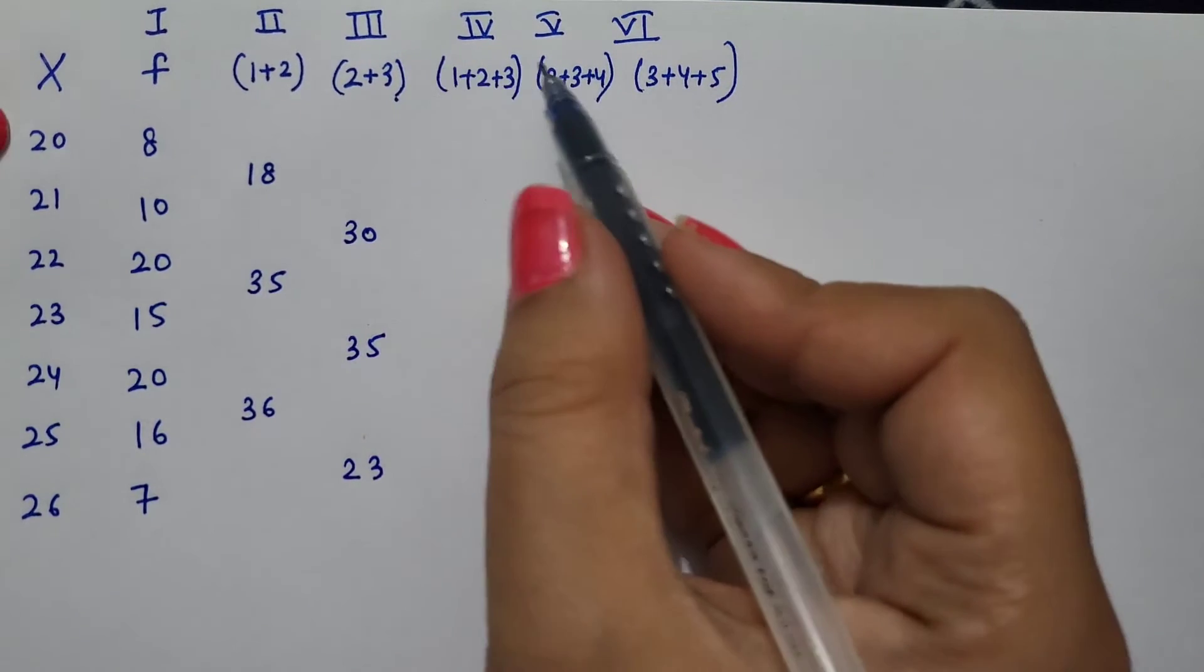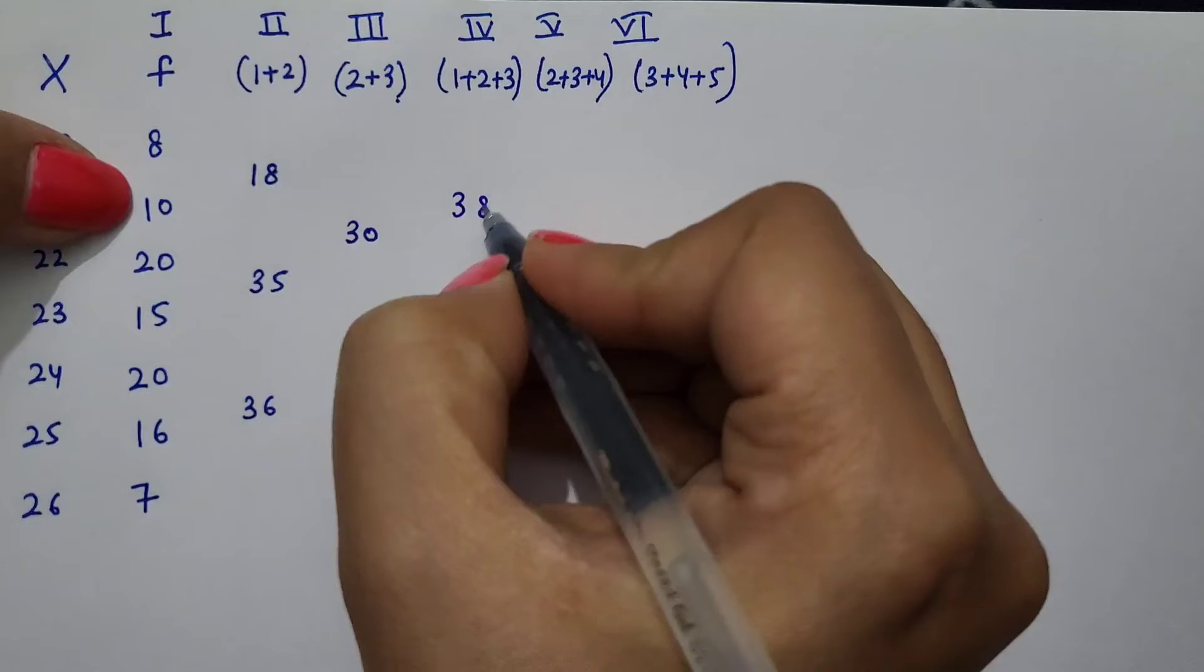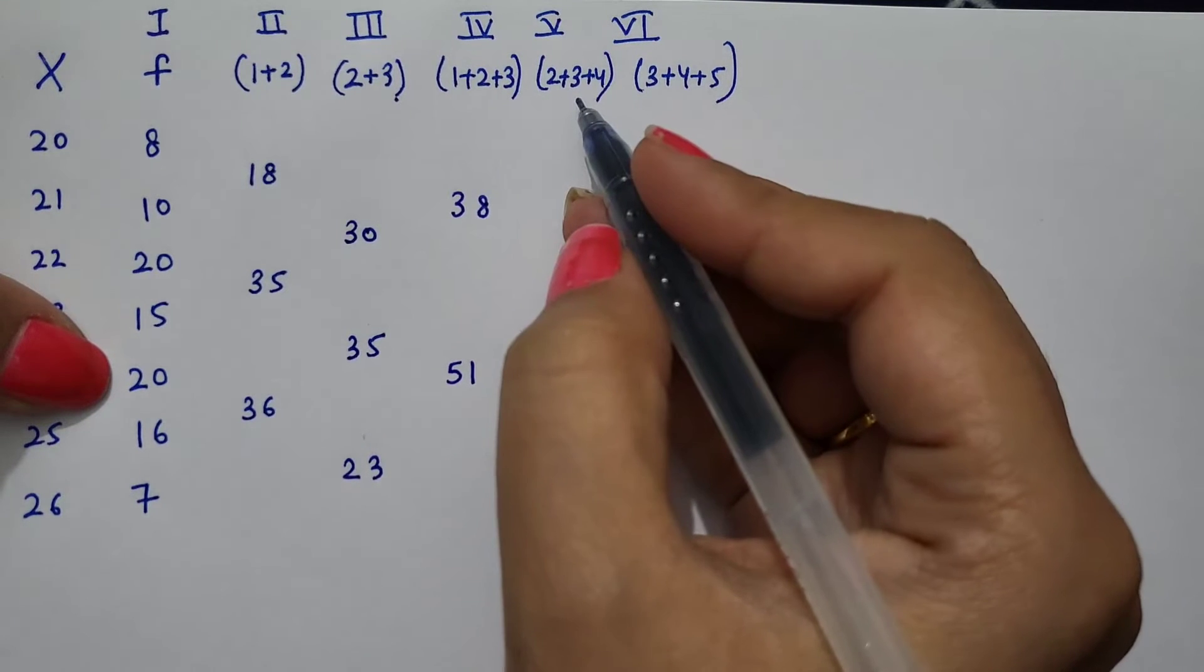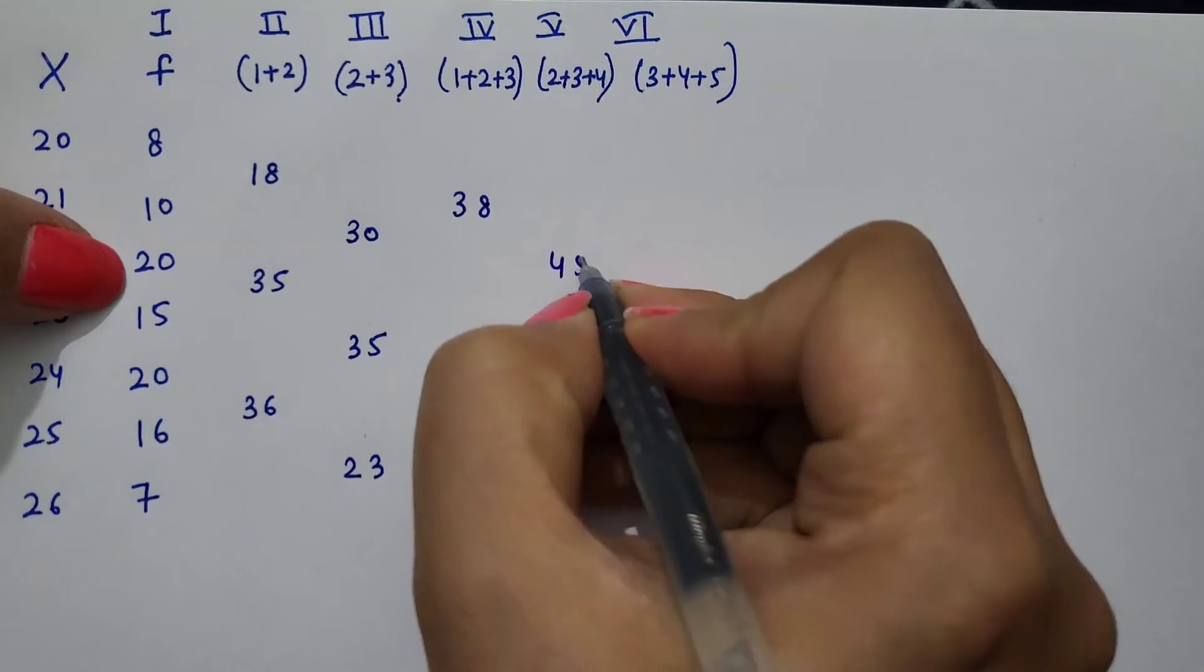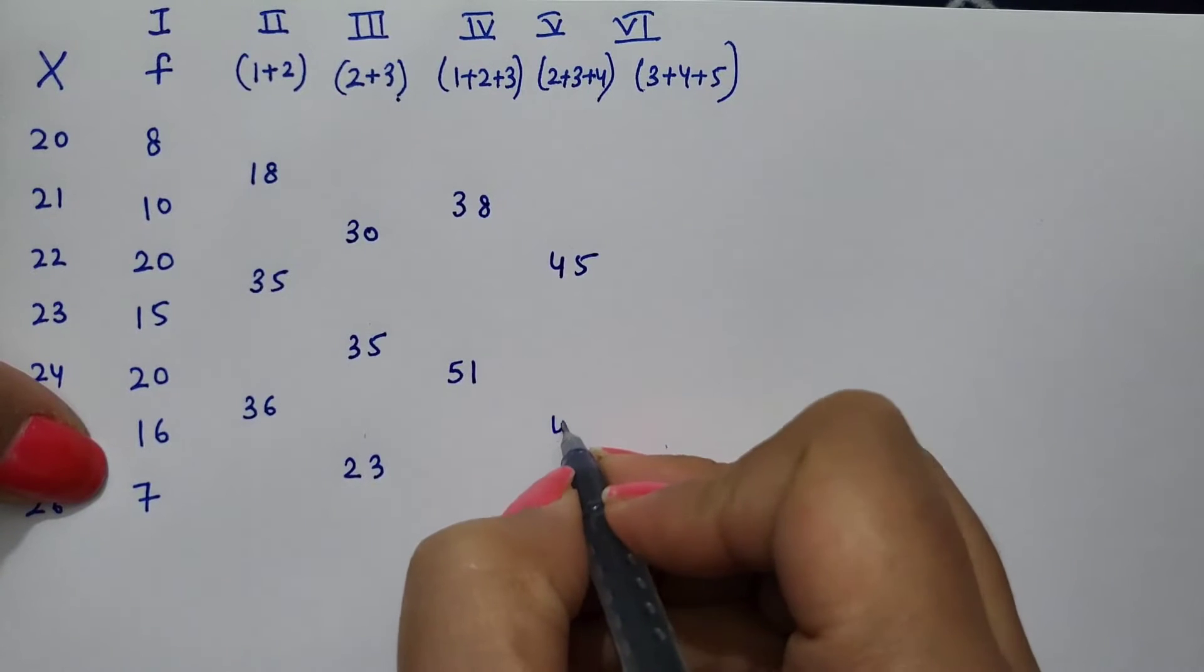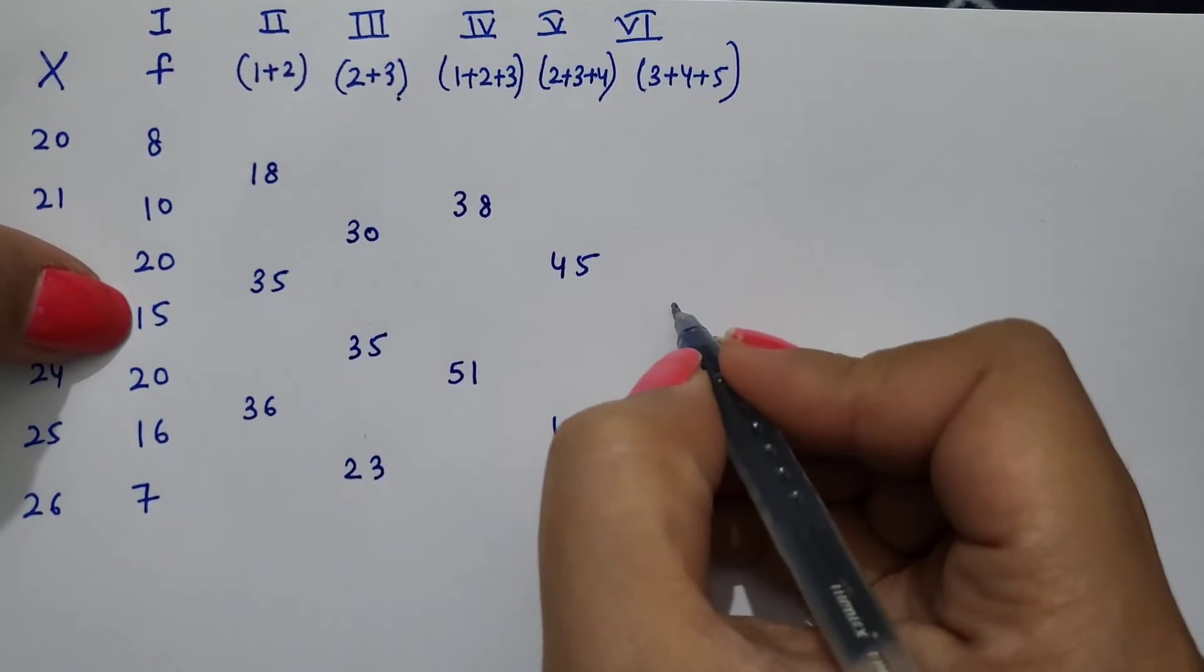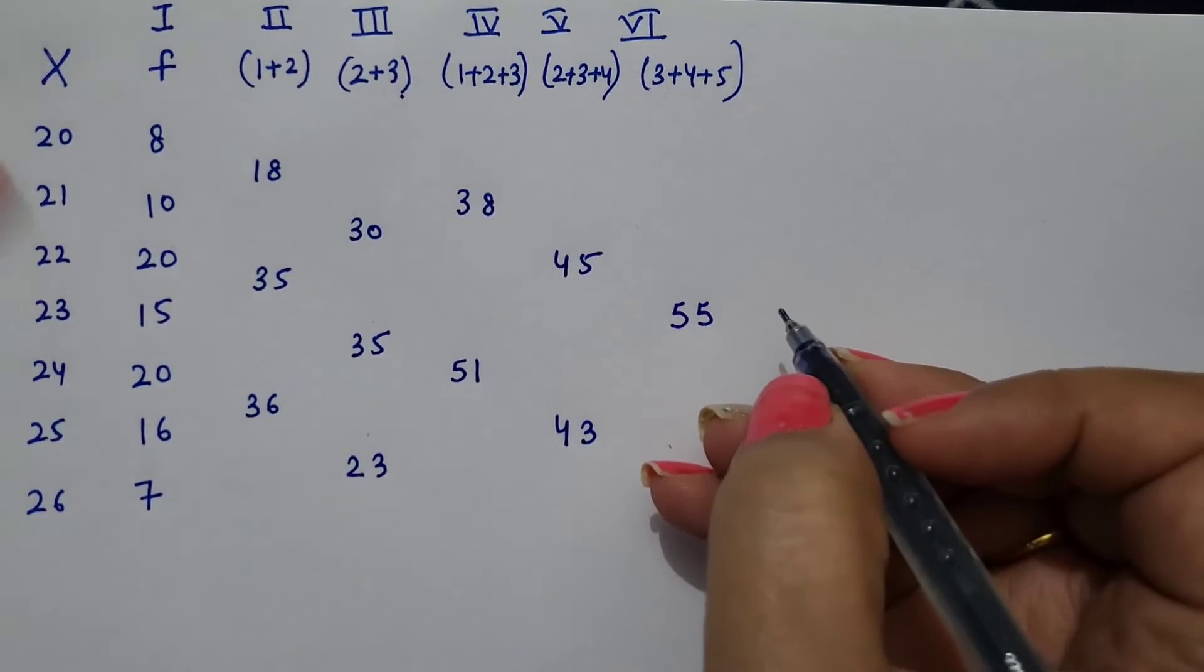Now, 1 plus 2 plus 3: 8, 10, and 20 is 38. Then 15, 20, and 16 is 51. Then 2 plus 3 plus 4: 10, 20, and 15 is 45. Then 20, 16, and 7 is 43. Now, 3rd, 4th, and 5th item: 20, 15, and 20 is 55, and then again 2 items are left, so you can leave it.